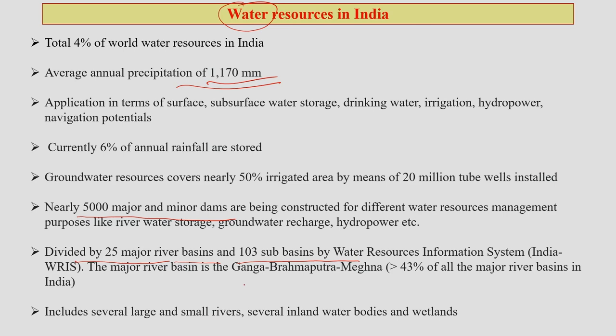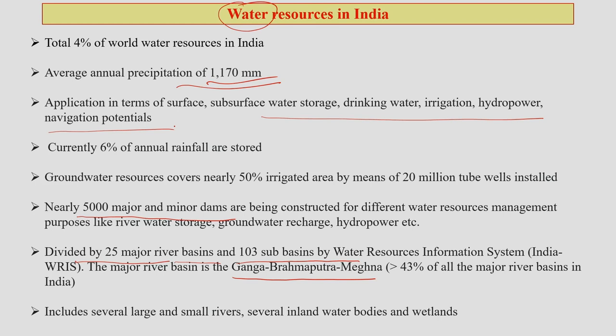The major river basins — Ganga, Brahmaputra, and Mahanadi — occupy almost 43 percent of the total major river basins in India. Water resources also include several large and small rivers, inland water bodies like ponds, tanks, and wetlands, each with specific ecological and environmental value. We will discuss these things in the following classes.